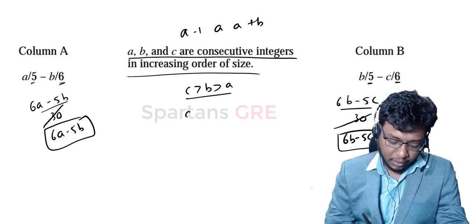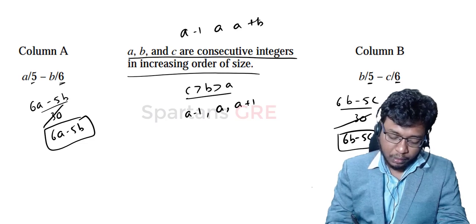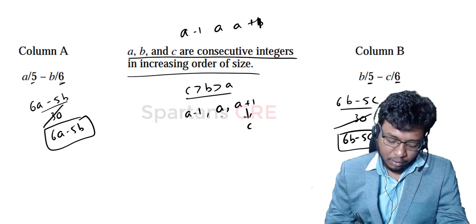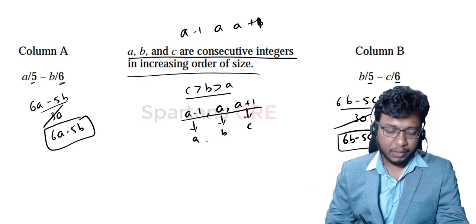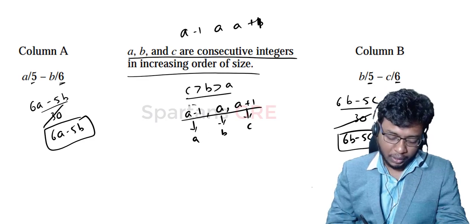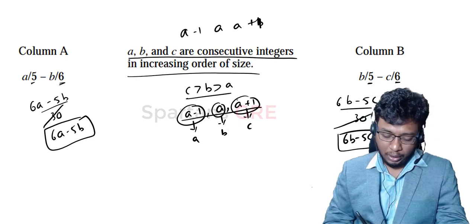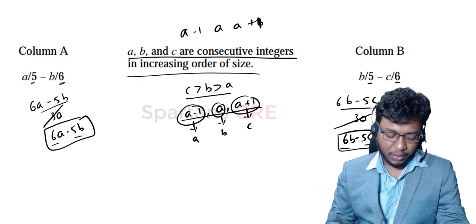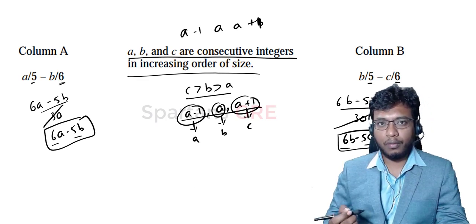So your numbers are A−1, A, and A+1. Since A, B, C are in increasing order: A = A−1, B = A, and C = A+1. Now in the expressions 6A − 5B and 6B − 5C, we have three variables, and I will try to reduce the variable count.